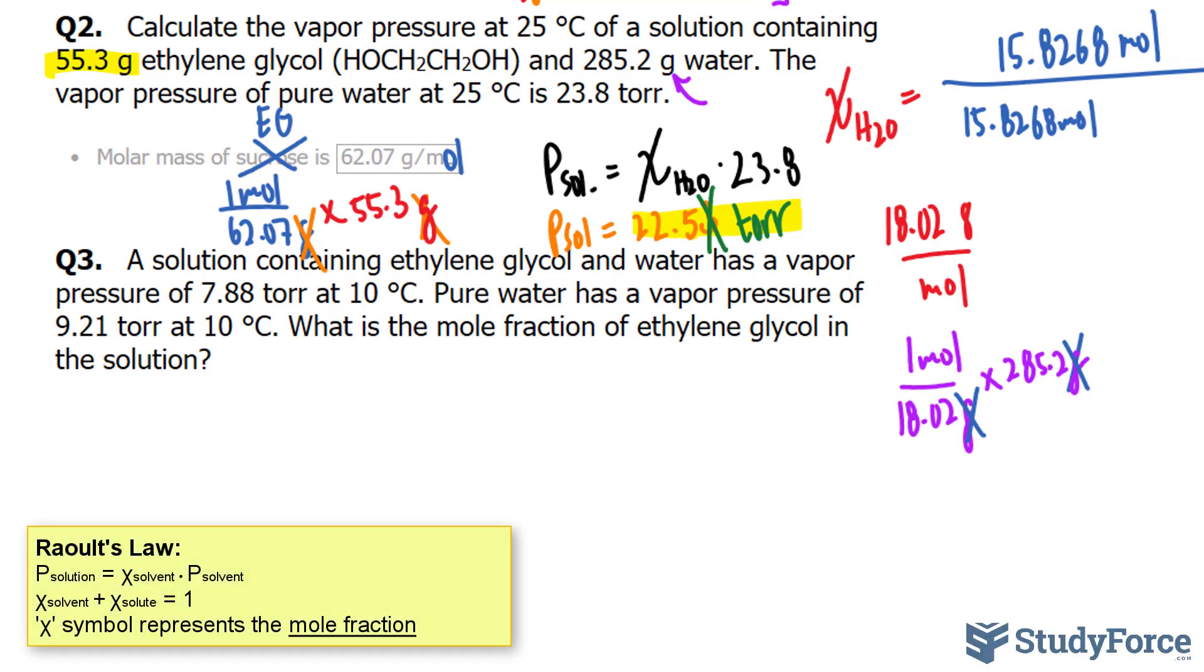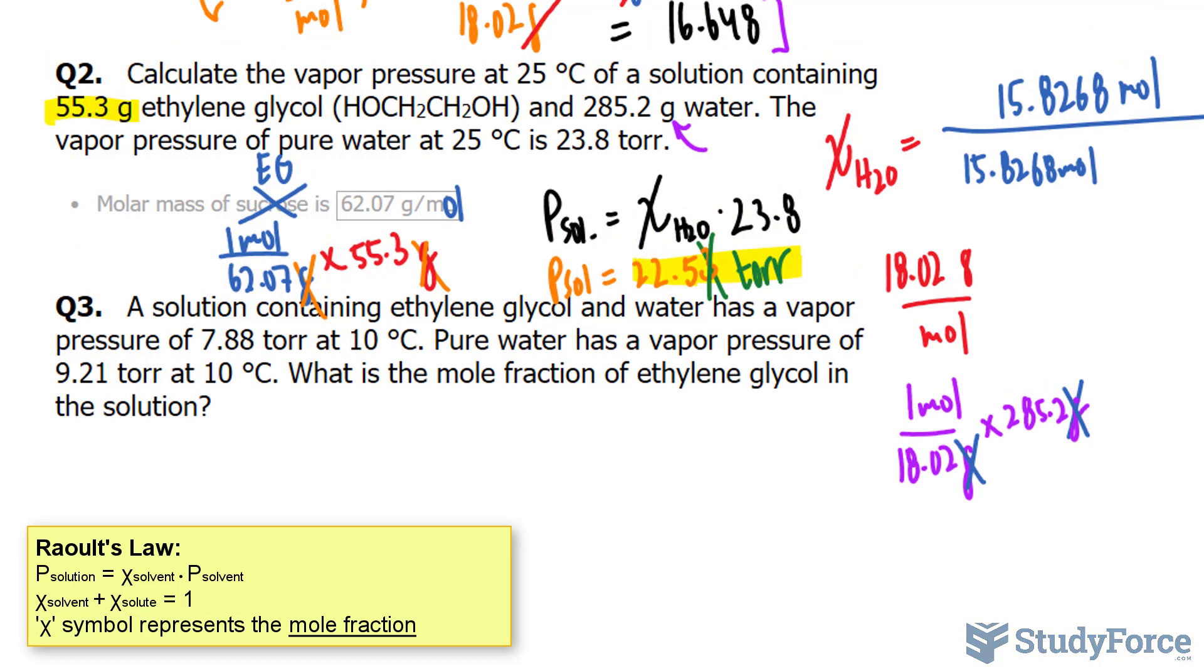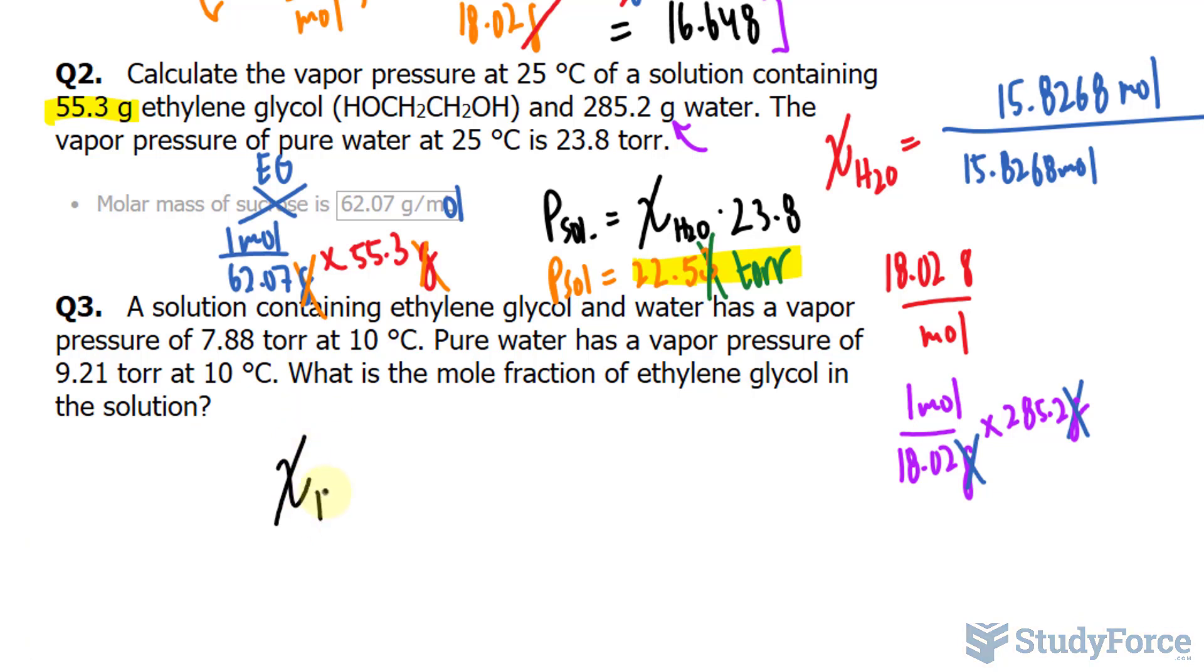Just like in questions number one and two, we need to use Raoult's Law and that relates the vapor pressure of a solution to the mole fraction of the solvent and the vapor pressure of the pure solvent. So with that being said, let me write down the relationship of Raoult's Law. We have the mole fraction of the solvent multiplied to the vapor pressure of the pure solvent, which is 9.21 and that is equal to the pressure of the solution which they give us at 7.88.